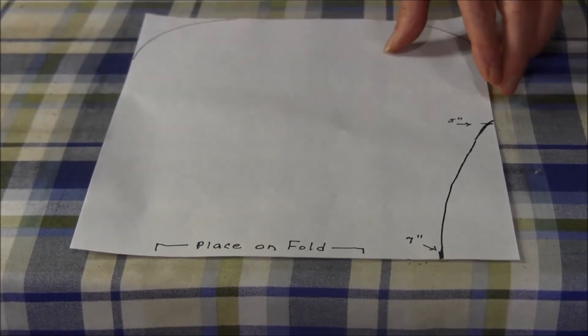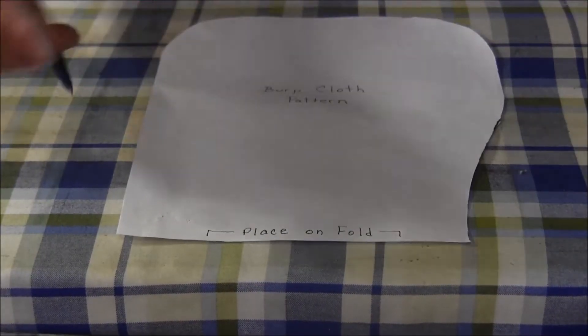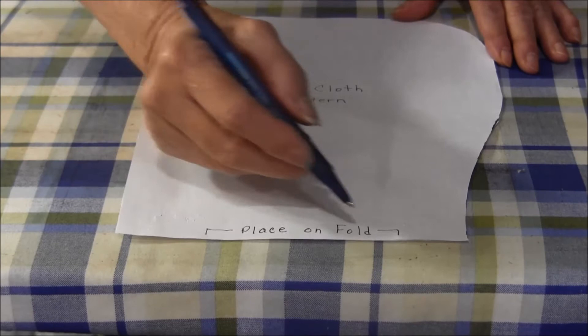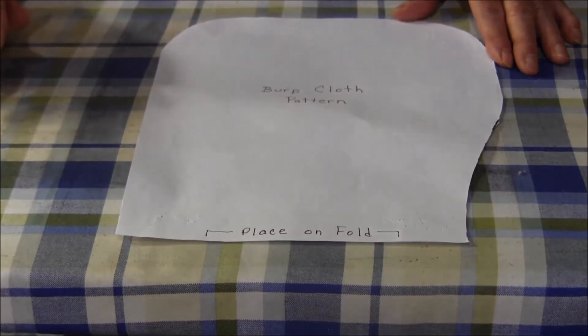Cut out your pattern. It looks something like this for your burp cloth. Down at this end you're going to place this on the fold when you cut your fabric.